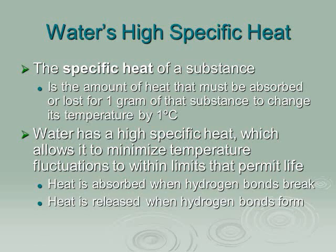Water's high specific heat allows it to minimize temperature fluctuations to within ranges that permit life — you can't get too hot or too cold. Any living organism requires a certain temperature range to survive. Two key points: heat is absorbed when hydrogen bonds break, and heat is released when hydrogen bonds form.